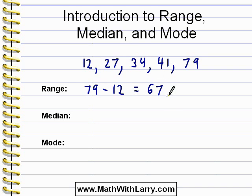So in this list, the range is 67. Obviously, it was important that the list be in order from smallest to largest, otherwise we would have gotten the wrong answer.